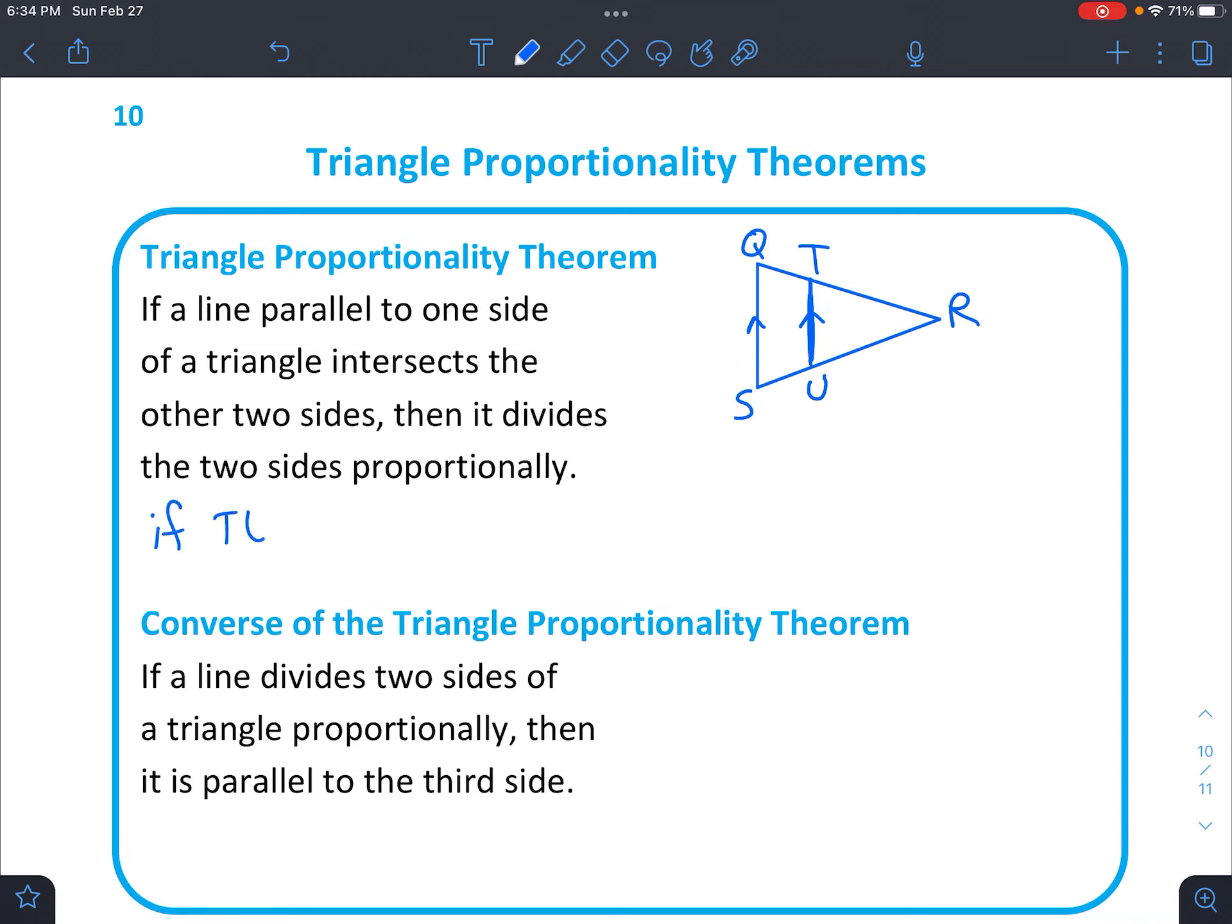So what that means with terminology would be if TU is parallel to QS, then RT over TQ. Let's look at where that is real quick. So RT is right here, and then TQ is right here.